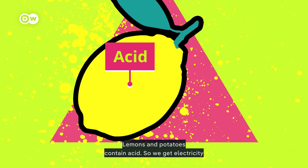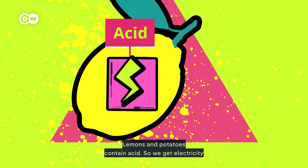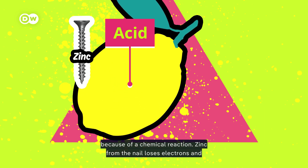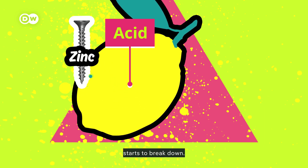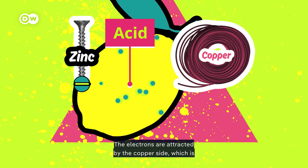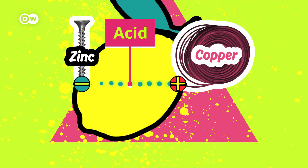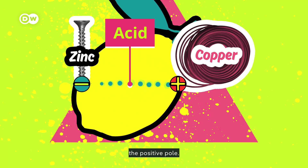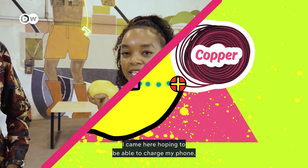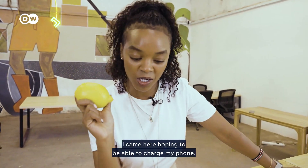Lemons and potatoes contain acid, so we get electricity because of a chemical reaction. Zinc from the nail loses electrons and starts to break down — this is the negative pole. The electrons are attracted by the copper side, which is the positive pole. The flow of electrons is electricity.